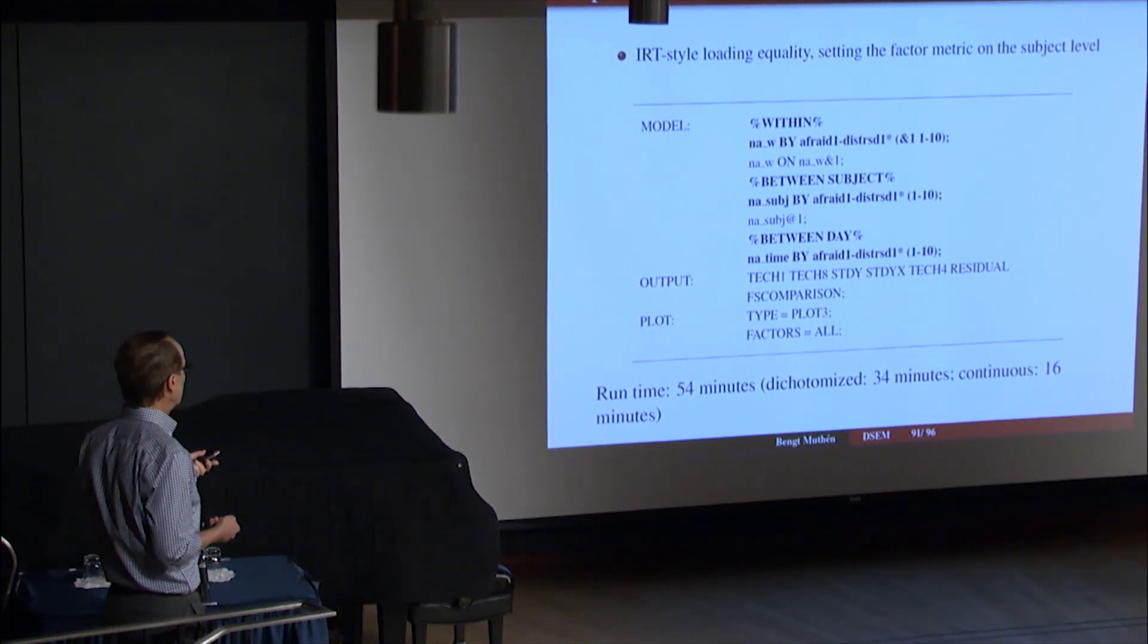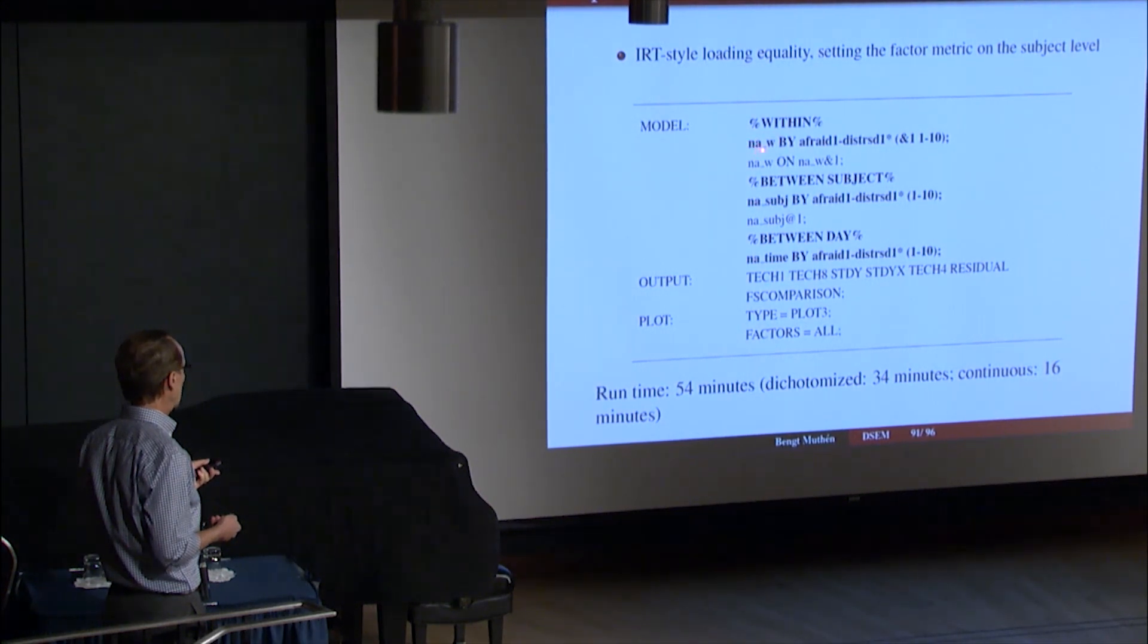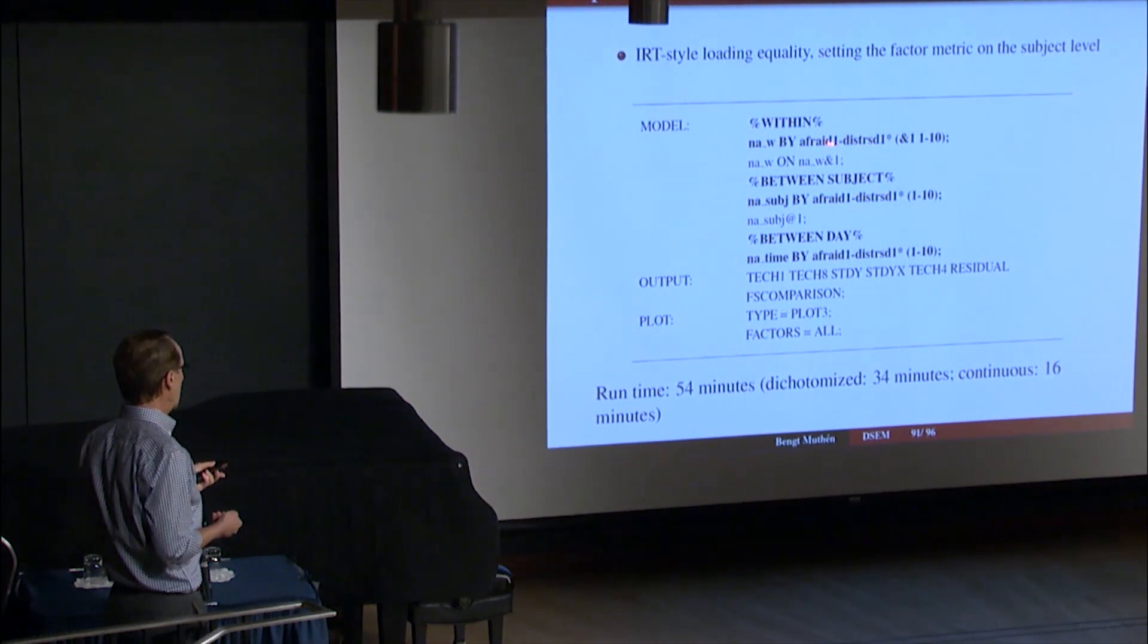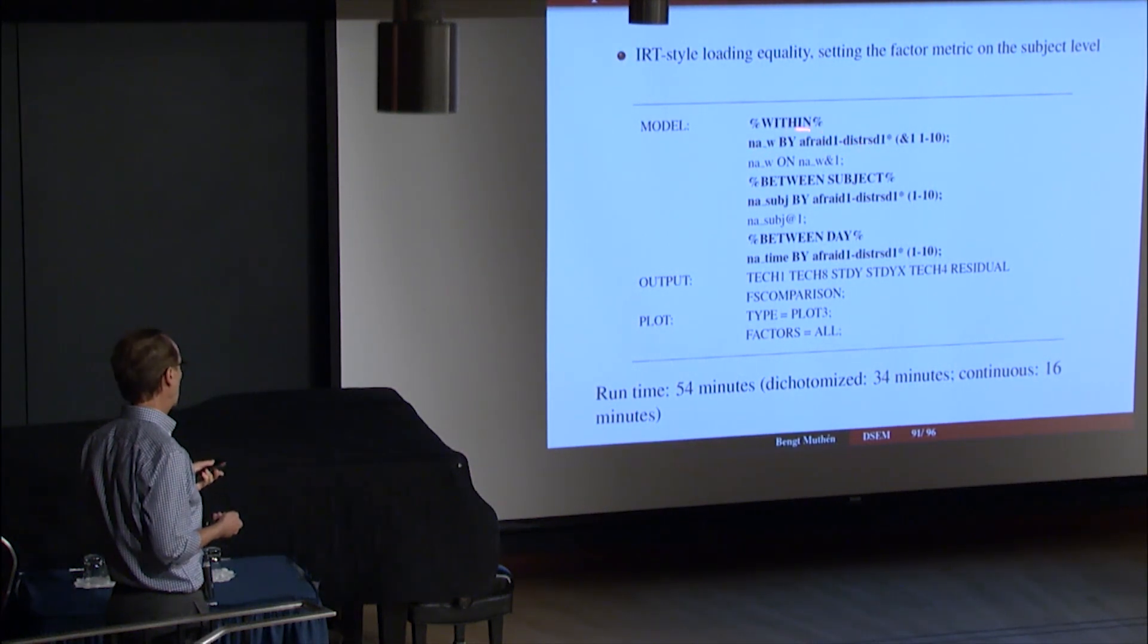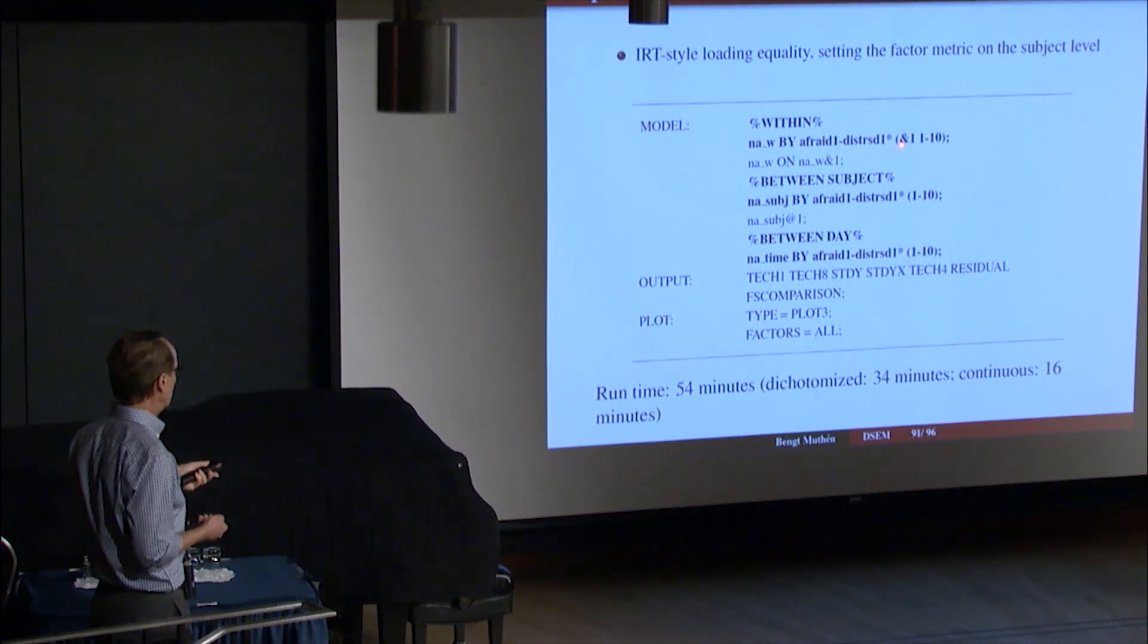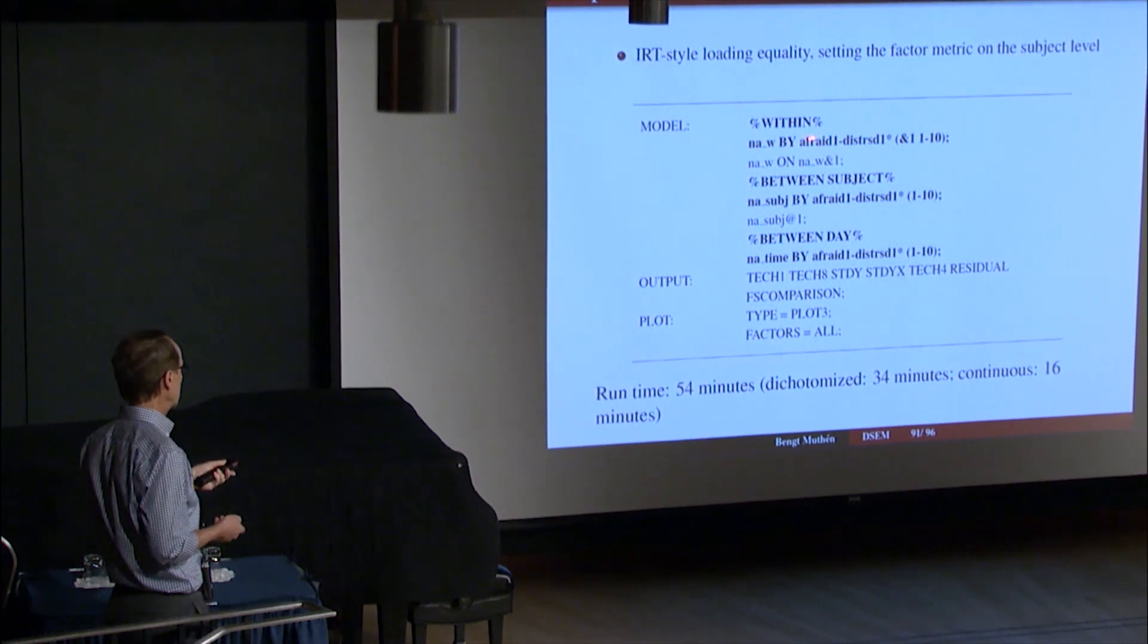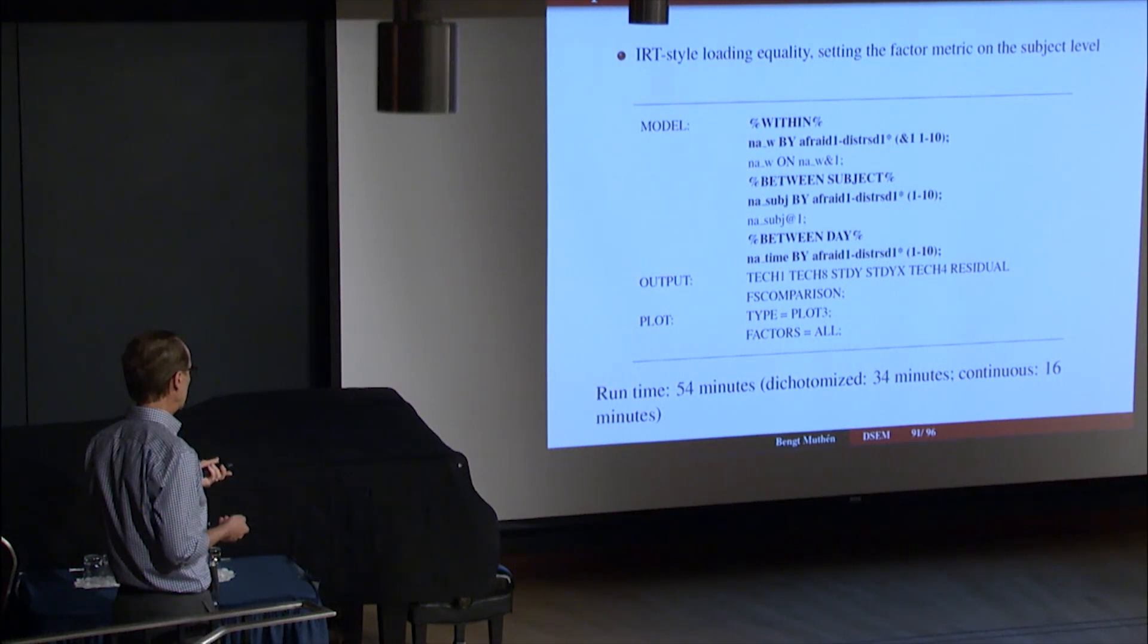So we're going to use the IRT style of loading equality setting the factor metric on the subject level. And what do I mean by that? Well, cross-classified factor analysis within, between subject, between day. So within, you say negative affect underscore within is measured by, that continuous latent variable is measured by these ten items that have been declared categorical. So this says then that those items have a probit regression on this continuous latent factor. There are indicators of it, which means they have probit regression onto the factor. The factor is the so-called x variable here then. And we hold all of those factor loadings free for reasons that would become clear. And we define the factor with lag one. And after that, space, and then we give labels, parameter labels one through ten, corresponding to the ten free loadings here. And then we do autoregression of that within factor onto itself. Not random at this point, but fixed.